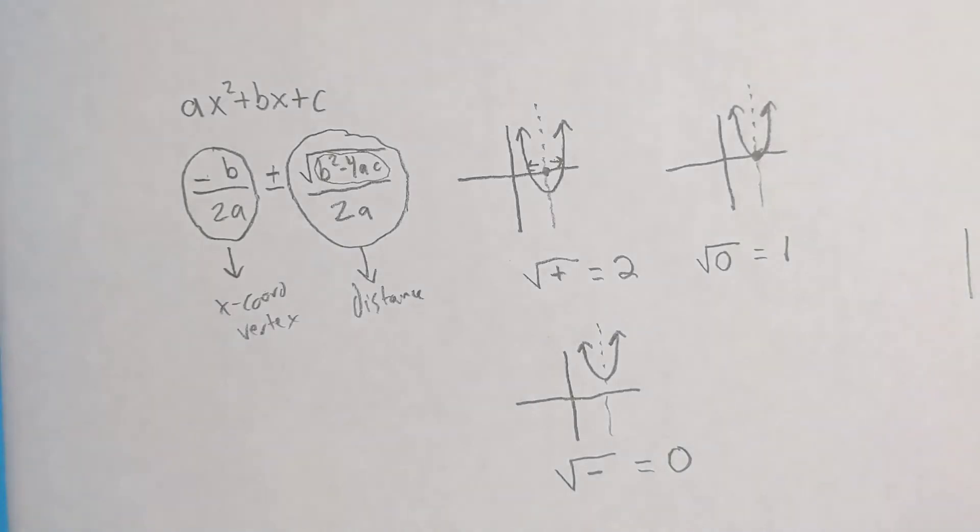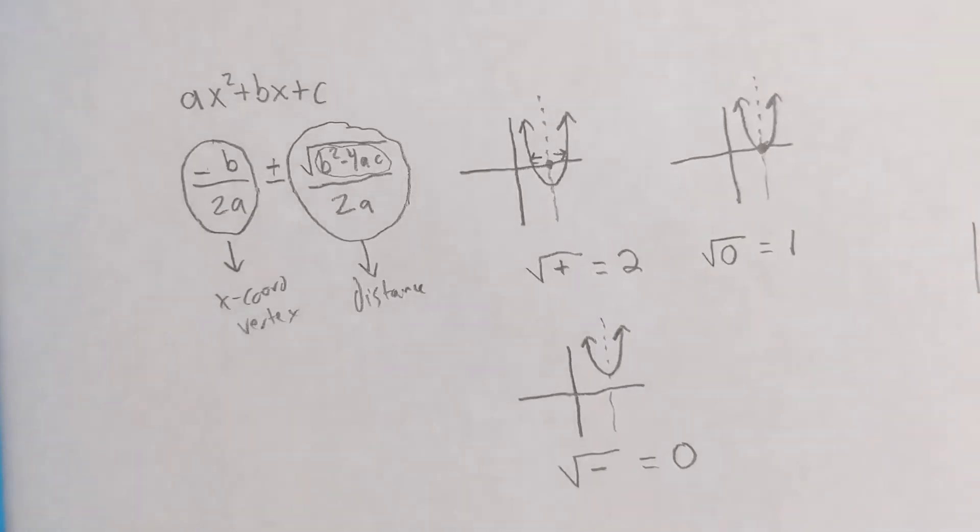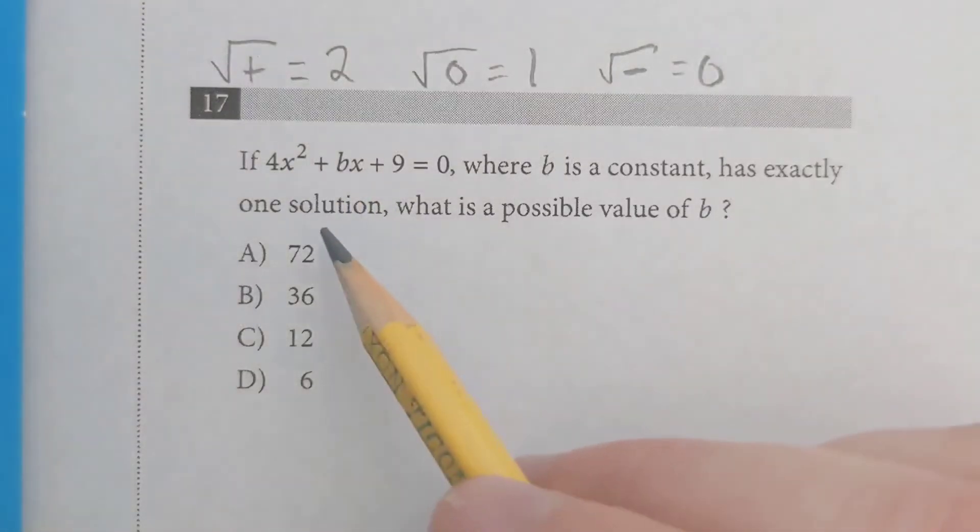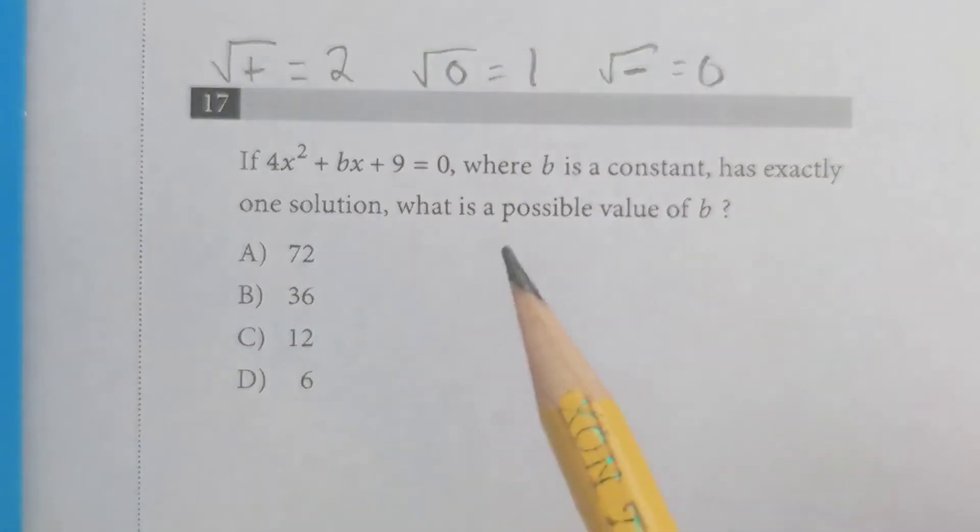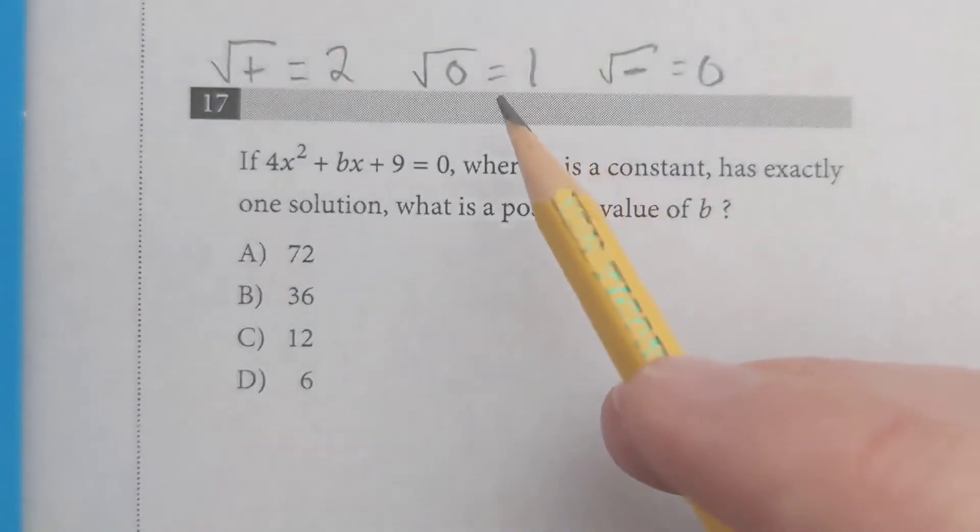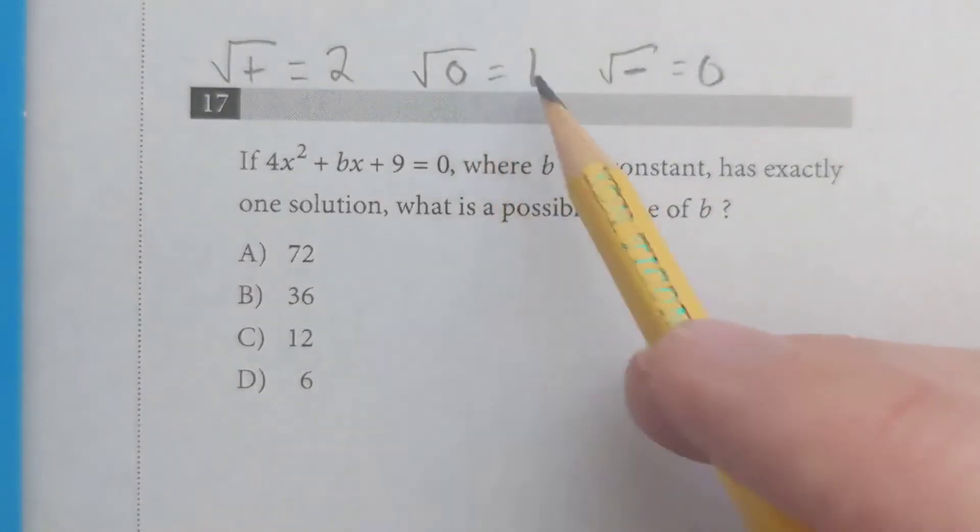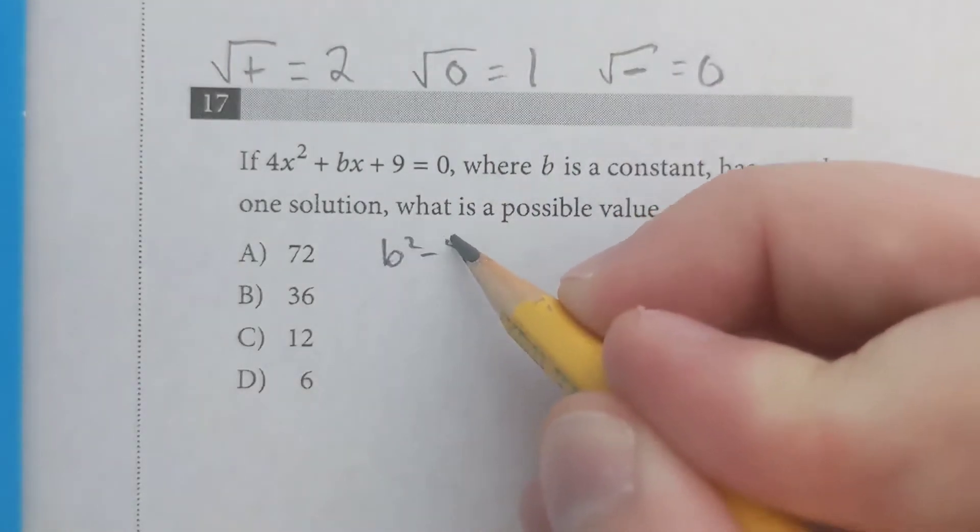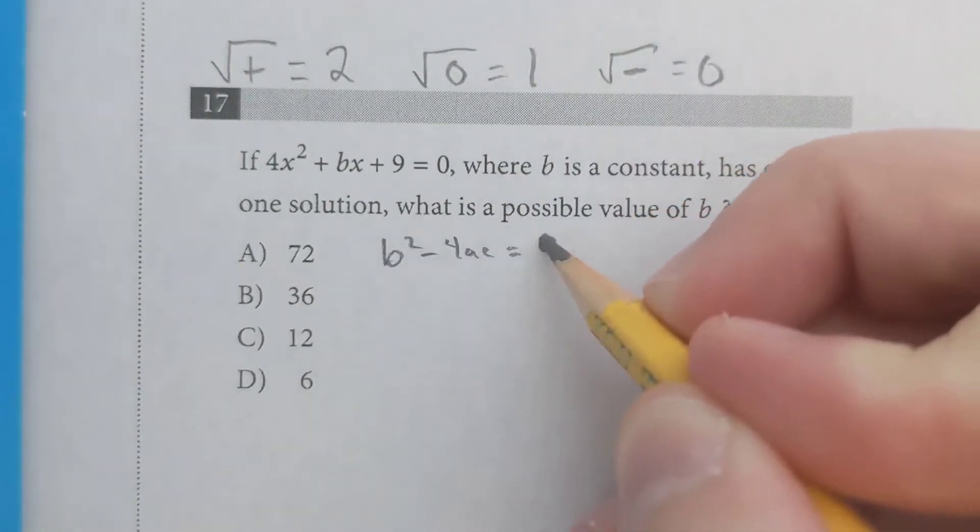So now let's go back and look at those questions again. So here we've got a quadratic equation. They're asking for one solution. That means we're going to have to use a discriminant, and the discriminant is going to have to equal zero if there's one solution. So we're going to say b squared minus 4ac equals zero.